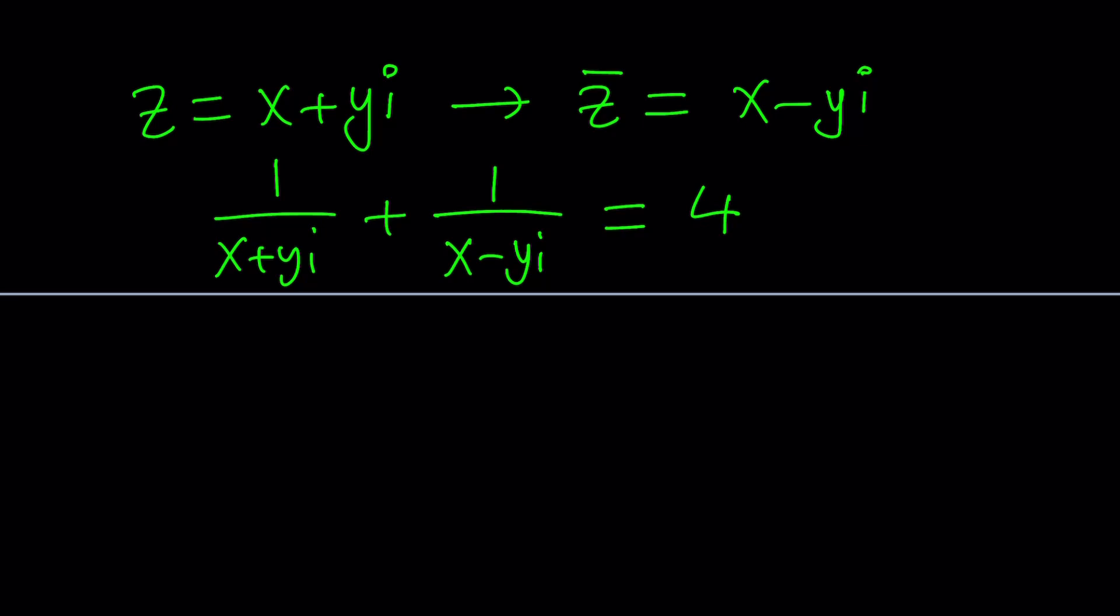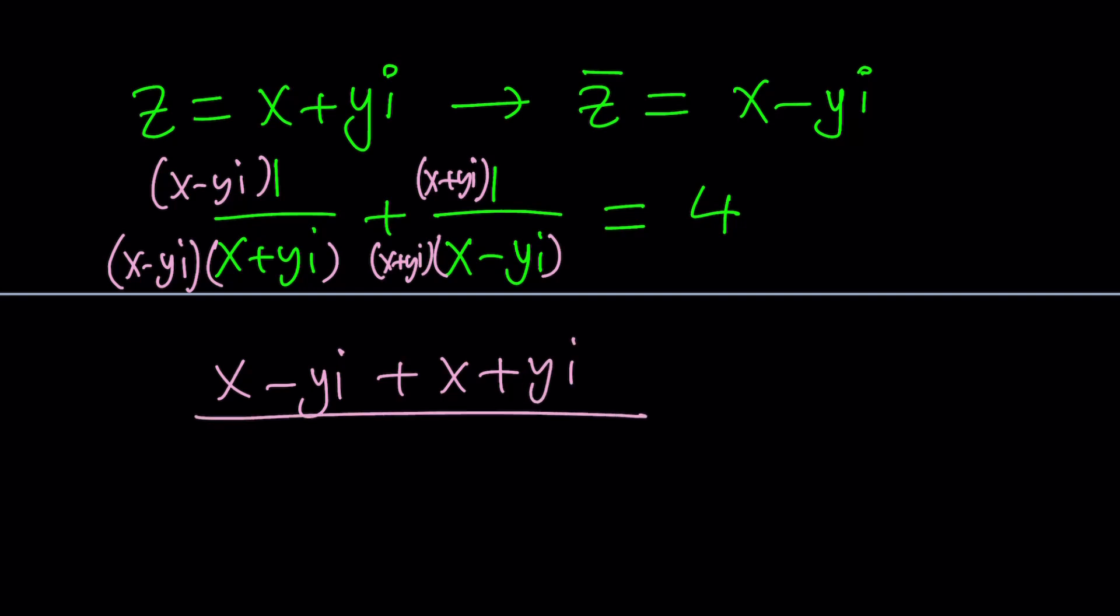So multiply by x minus y I here and here. Oops, I should probably use it this way. And here as well, x plus y I and x plus y I. In other words, we made a common denominator. The numerator becomes x minus y I plus x plus y I. Nice. The denominator from difference of two squares becomes a sum of two squares, which is kind of funny, right? Because i squared is negative 1.